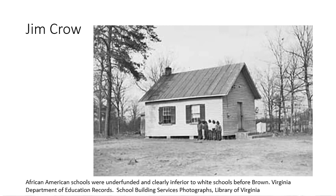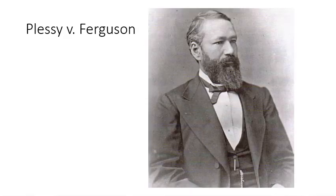Shortly after these constitutional amendments were ratified, a series of segregating laws were passed mostly in southern state legislatures. These mandated the separation of the races in restaurants, hotels, railroad cars, and so on. These laws came to be known as Jim Crow laws, and almost immediately people began to challenge their constitutionality. The first great challenge was Plessy v. Ferguson — you could consider it the opposite of Brown v. Board. Whereas Brown is widely considered one of the best Supreme Court decisions of all time in terms of what it achieved, Plessy is one of the worst.